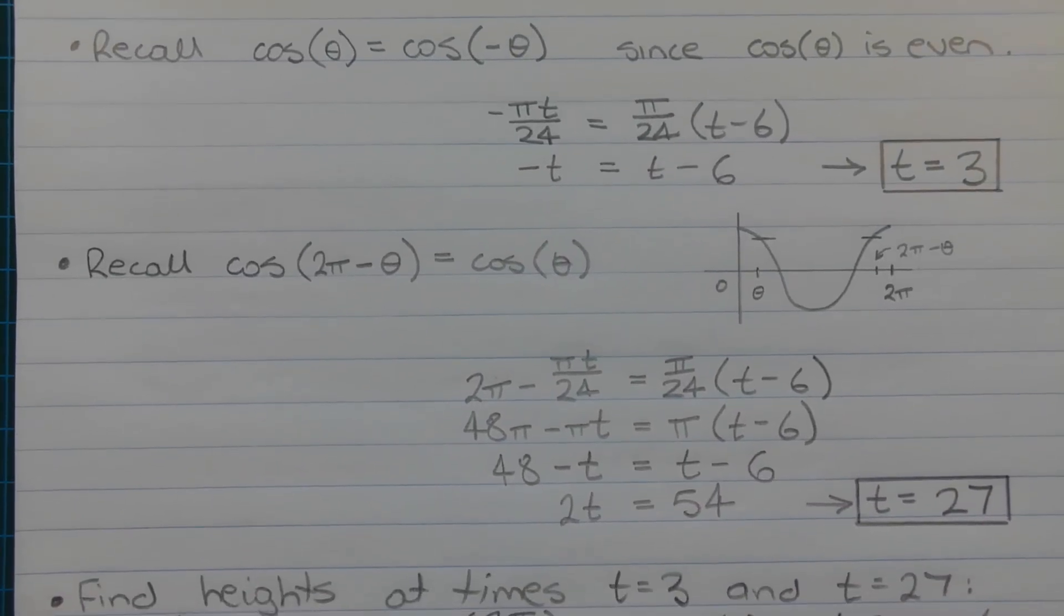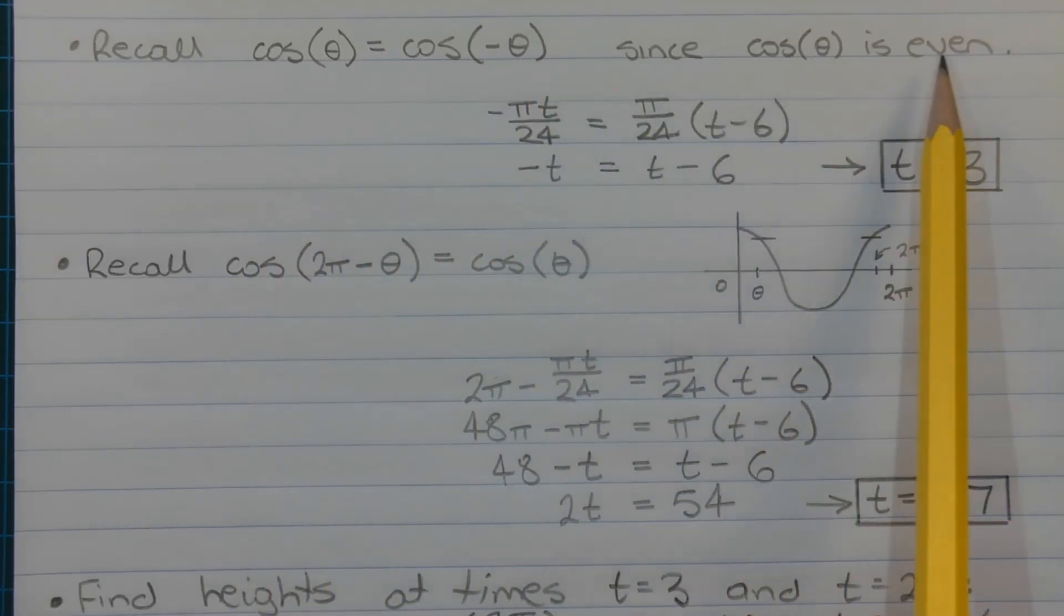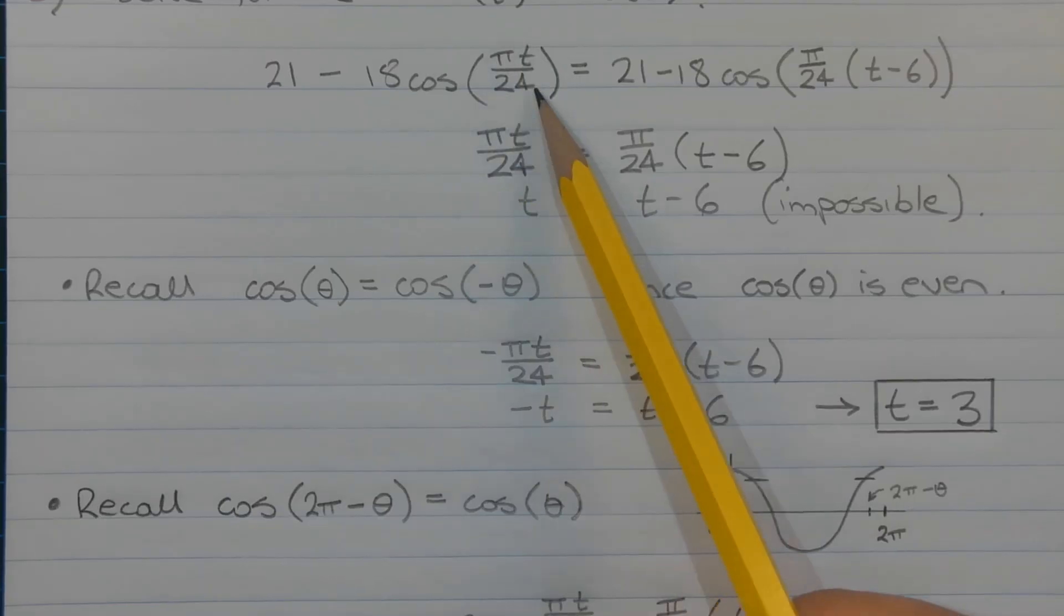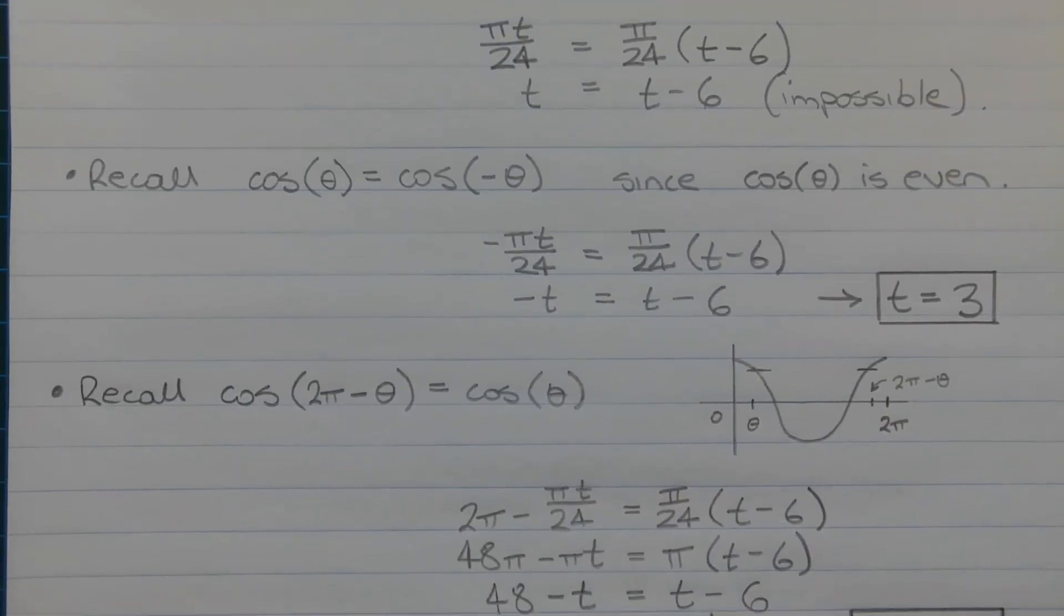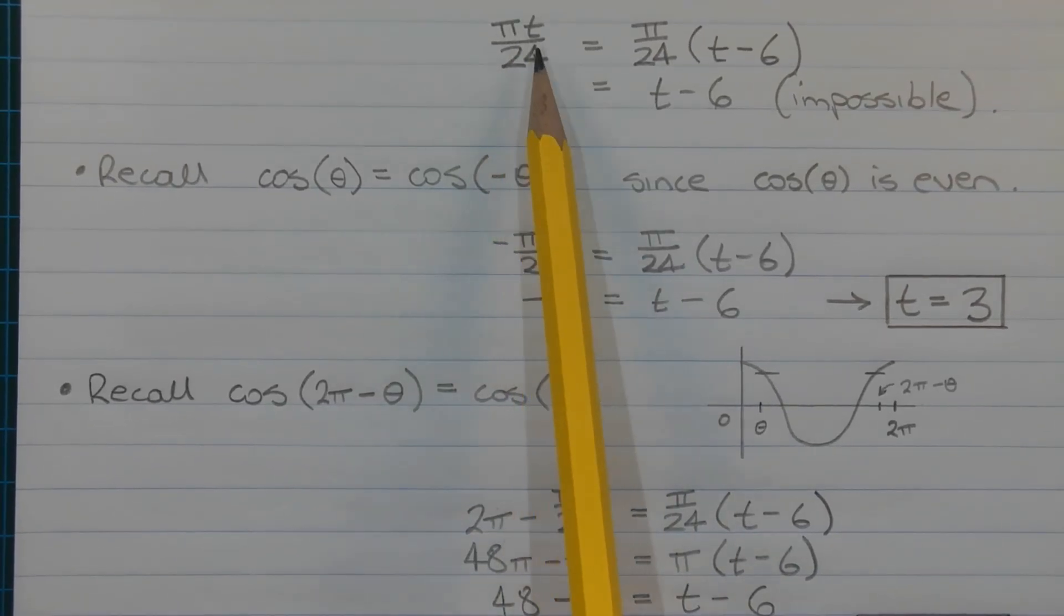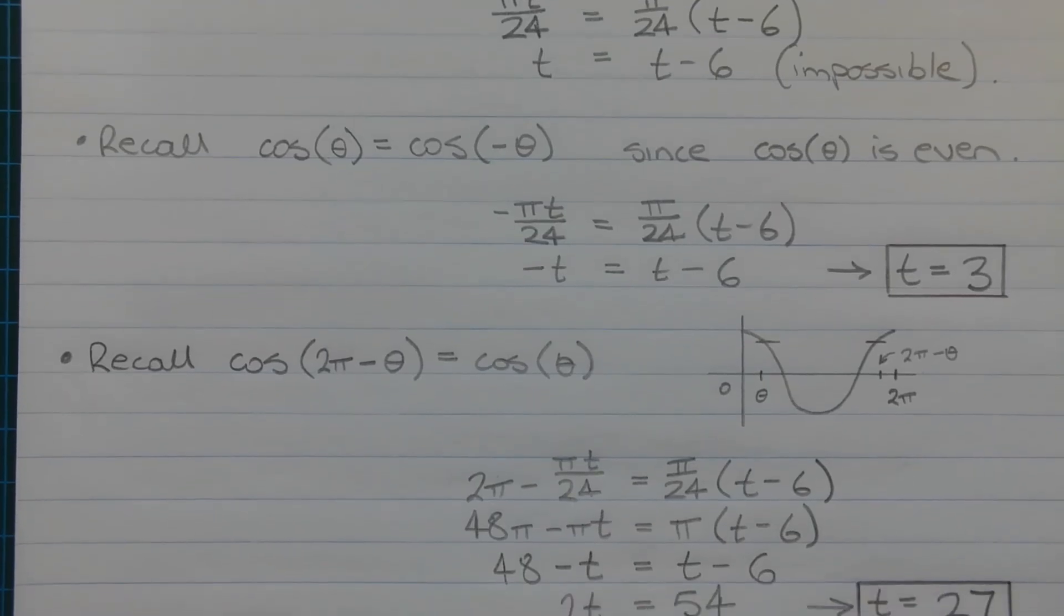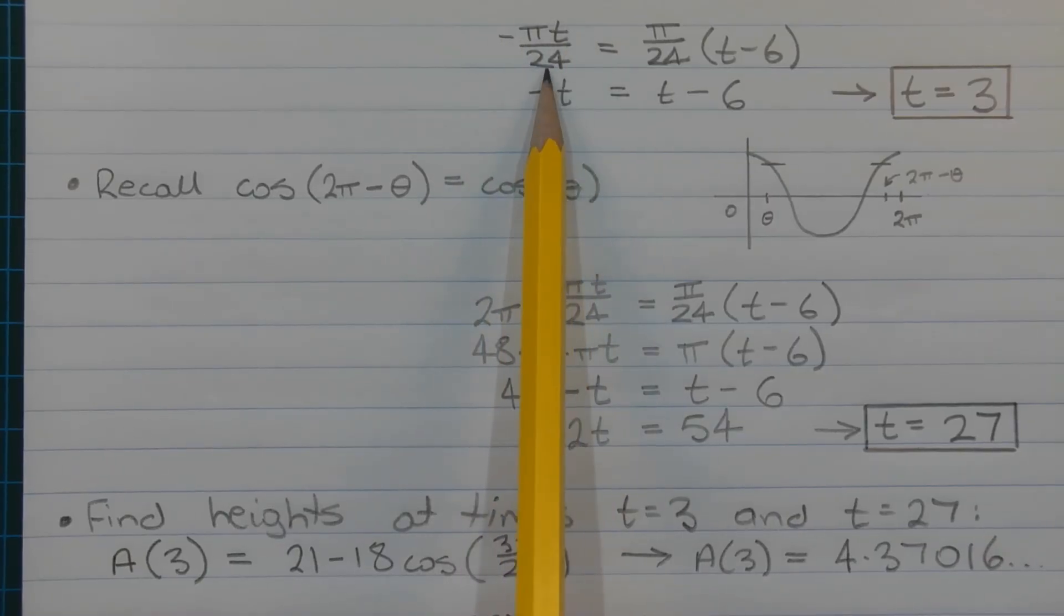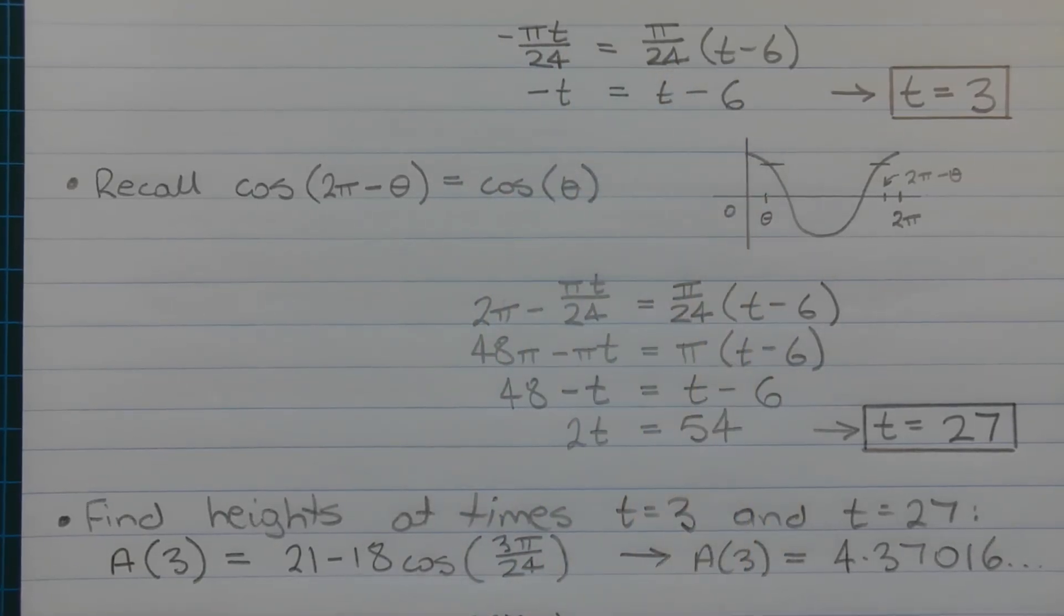Now the next thing to consider is the even characteristic of the cosine curve. Recall that cos(θ) equals cos(-θ), since cos(θ) is an even function. So if we go back to the original equation we can replace the angle here on the left hand side with its negative. So we can save a few steps and we can go to this point here. So we can replace πt/24 with negative πt/24. And we get this equation here. So negative πt/24 equals π/24 times (t - 6). And that simplifies to negative t equals t minus 6. And we do get a valid solution. T equals 3.